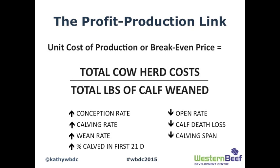When we talk about cost of production, I usually report it in dollars per cow wintered. Another useful way to look at cost is in terms of dollars per pound of calf weaned — that's called your unit cost of production, or your break-even. The formula is: total cow herd cost divided by total pounds of calf weaned. The only ways to influence your break-even price are to either lower your total herd costs or increase your total pounds of calf weaned.